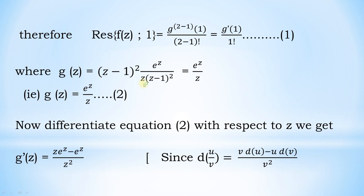That is g(z) = (z−1)² · f(z) = e^z divided by z. So g(z) = e^z / z. Now differentiate this equation with respect to z.